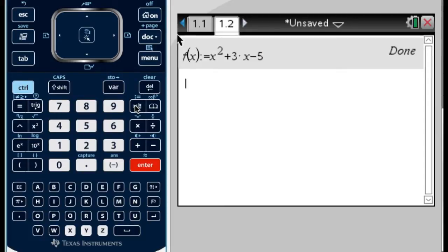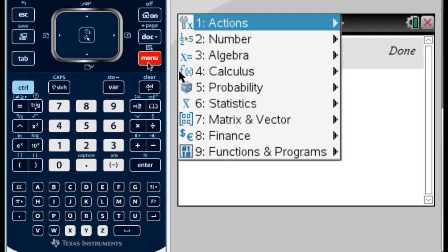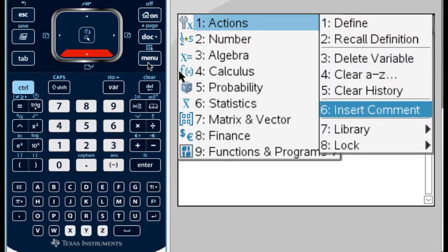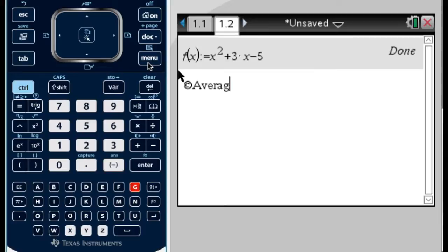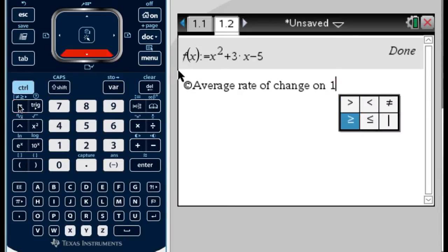And then if I wanted the average rate of change on the interval from 1 to 6. So somehow there's a way that I could type that. Let me insert this here. So I want average rate of change on 1. So this is how it might look on paper if you were to write it.